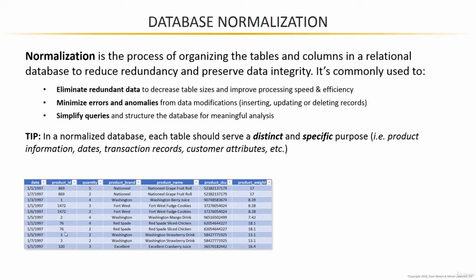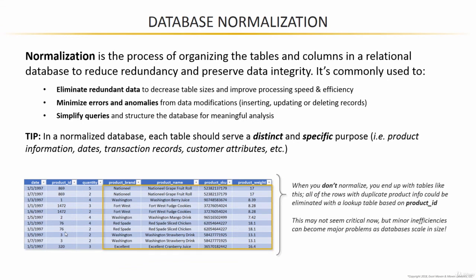What you end up with here are all of these duplicate rows in any case where the same product ID appears more than once. So you see duplicate brand names, product names, duplicate SKUs, and product weights. You might be wondering, okay, that's not that big a deal — I'm still getting the information that I need. In fact, I have it all in one place in a single table, which is great. So I don't see the downside here.